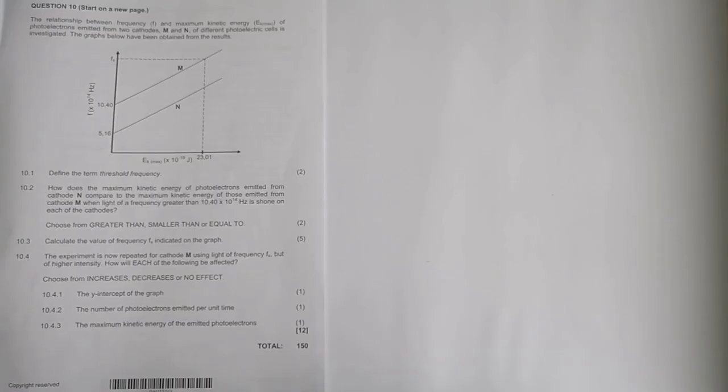Today we're looking at the photoelectric effect, question 10. The question says: the relationship between frequency and maximum kinetic energy of photoelectrons emitted from two cathodes, M and N, of different photoelectric cells is investigated. That sounds like a mouthful. The graphs below have been obtained from the results. Usually we have this graph the other way around, but examiners being examiners, they have to try and throw in a trick or two.